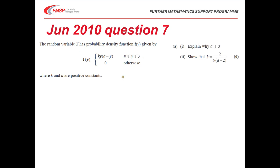In this question, firstly we need to explain why a is greater than or equal to 3, and also find the relationship that k equals 2 over 9a minus 2. It all comes down to the support. We have to recognize that f of y must be greater than or equal to 0 for all values of y.